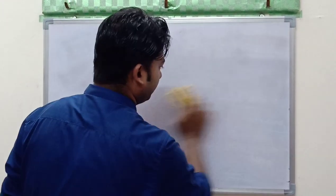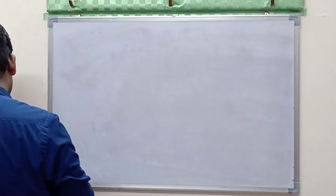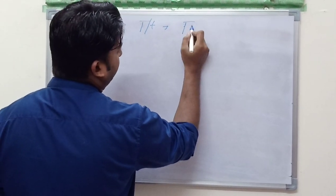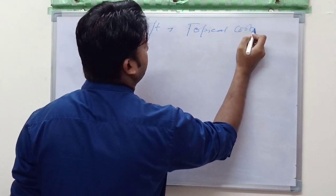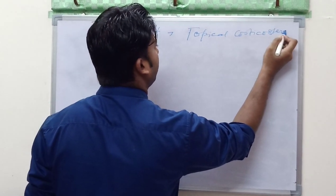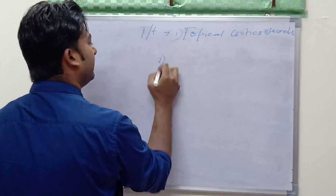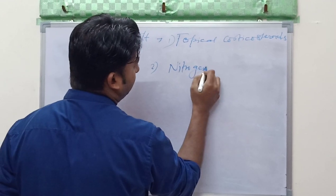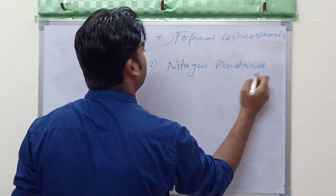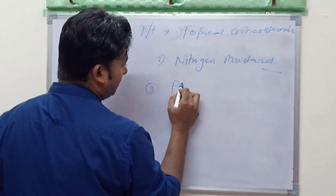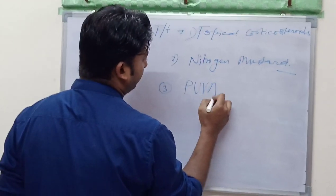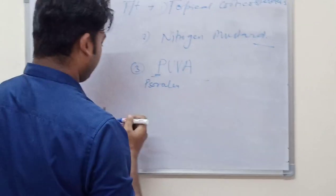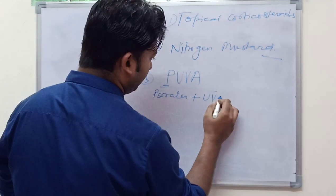Moving on to the treatment part. For the treatment we use topical corticosteroids. Second we use nitrogen mustard. Third we can use PUVA, it is psoralen plus UVA therapy.